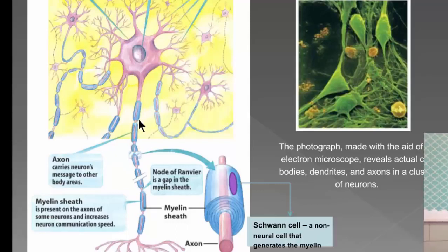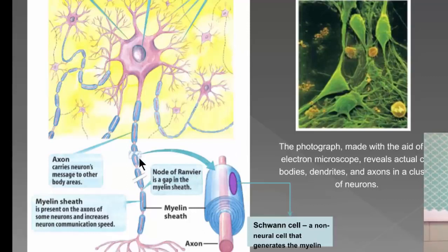The points in between the myelin sheath — notice they're kind of separated — are called nodes of Ranvier. It's the gap in the myelin sheath. The reason myelin sheath speeds up the neural message is because the message is able to skip or go faster through the myelinated parts and just depolarize at the nodes of Ranvier. You should also know that a Schwann cell — that purple spot in the enlarged myelin diagram — is a non-neural cell that generates the myelin.